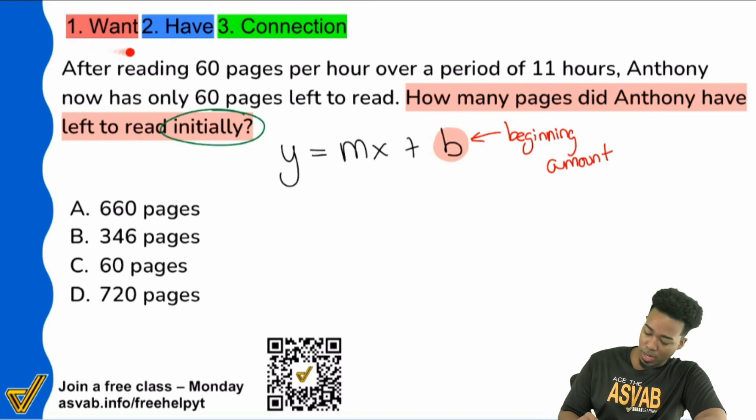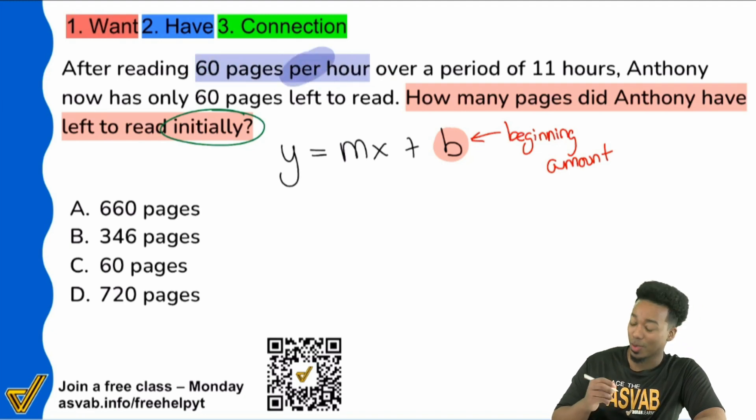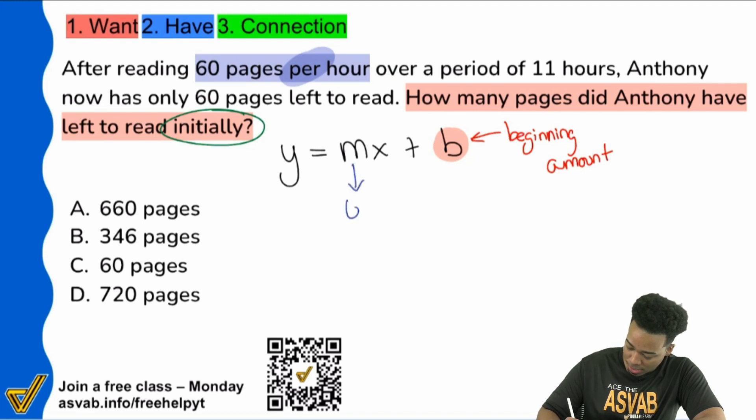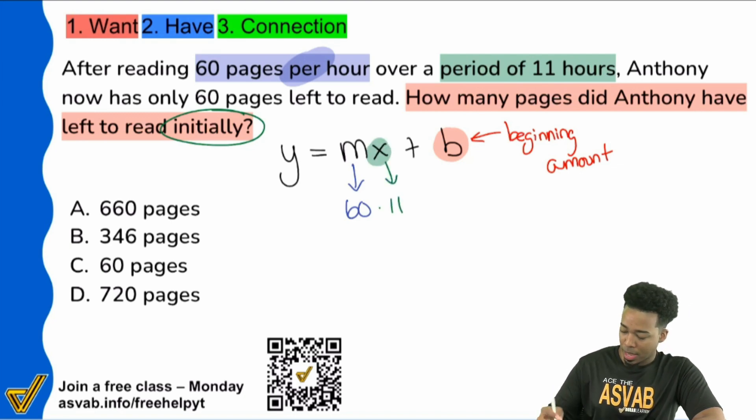So here we go. After reading 60 pages per hour, instantly, 60 pages per hour, again, the word per is what gives it away. That right there, my friends, is our rate, 60 pages per hour. And then it says, over a period of 11 hours, instantly tells me that we're dealing with our time. Boom. I'm going to say right here, and that's 11.